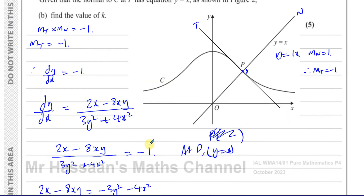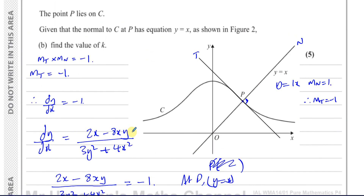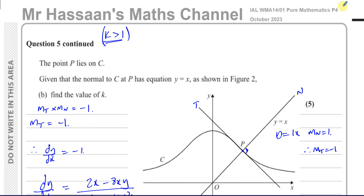That's the conclusion of question five. Other questions from this paper can be found in the playlist in the top right corner at the end of the video. Other questions on P4 implicit differentiation are linked as well. You can subscribe by clicking the link, and there's a video explaining how to use the channel to find what you're looking for. Thank you for watching, see you soon.